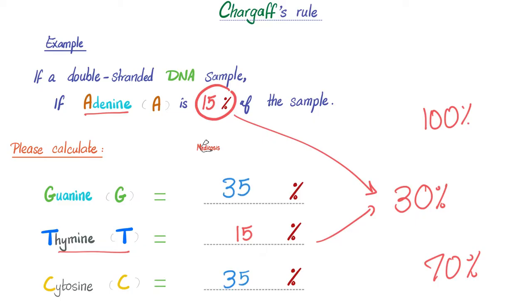So you get 35% here and 35% here. Let's add the purines together, just to practice. Here is adenine, which is a purine, and guanine, which is purine, which happens to be 15% plus 35%. The purines are 50%, which means the pyrimidines are 50%, which means both are equal. And each represents half of the double-stranded DNA sample. Hashtag Chargaff's rule.